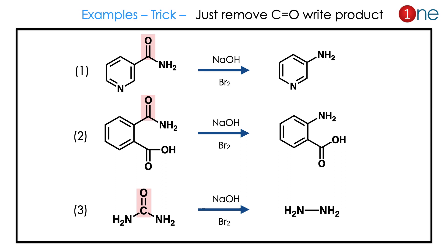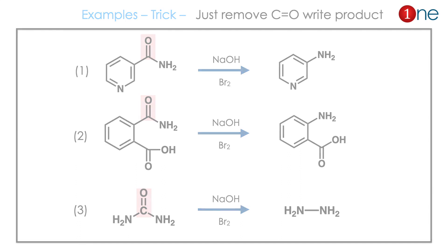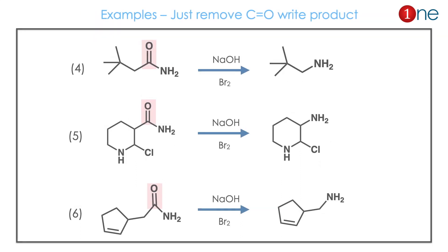The first example is a pyridine with an amide group — just remove CO and you have the amine. The second example is the same: CO removal gives amine. The third one is interesting because you have urea; Hofmann reaction is still possible and you get NH3 as the product.